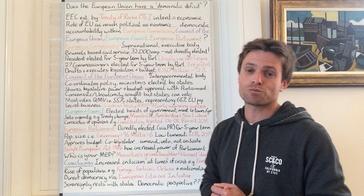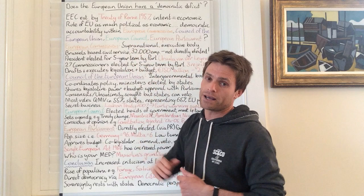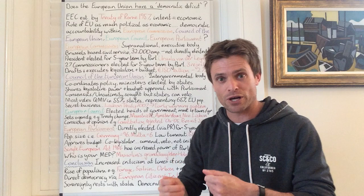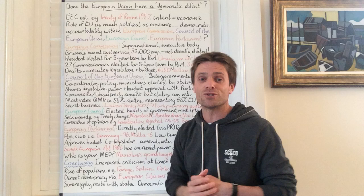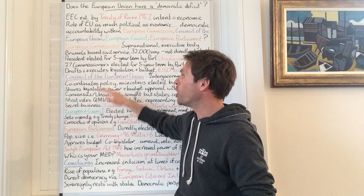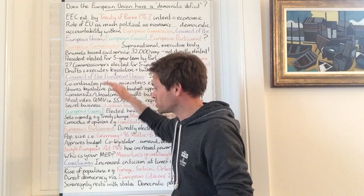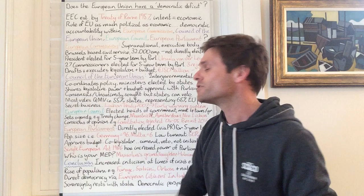Because of its expanded power, the question is whether there is sufficient democratic accountability within EU institutions. I've selected four main institutions to focus on regarding the charge of democratic deficit. Whether the exam question covers the EU as a whole or references specific institutions, I'd suggest dividing your answer into these four component parts. The level of democratic deficit, if it exists, differs in each institution — which is the logic behind this essay structure.